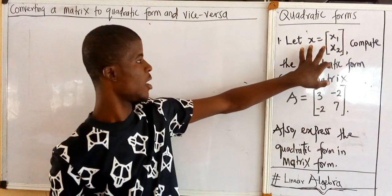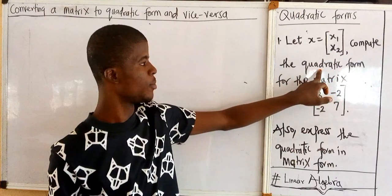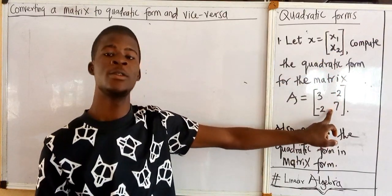We are given that x is equal to this matrix x1, x2. And we are asked to compute the quadratic form of this matrix.